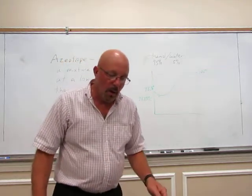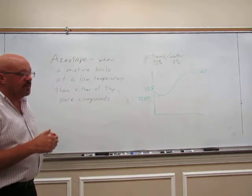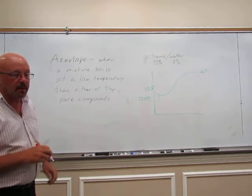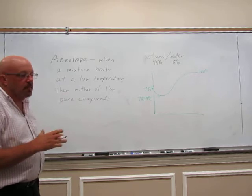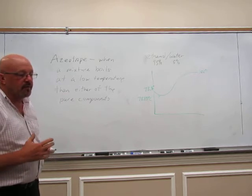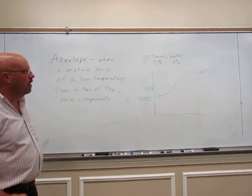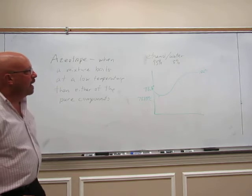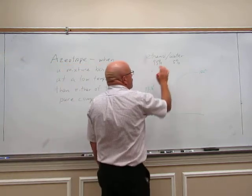Now, when do we see azeotropes? This is typically seen when we have hydrogen bonding. This is strong intermolecular forces that are in play here to give the azeotrope. So ethanol and water can hydrogen bond.